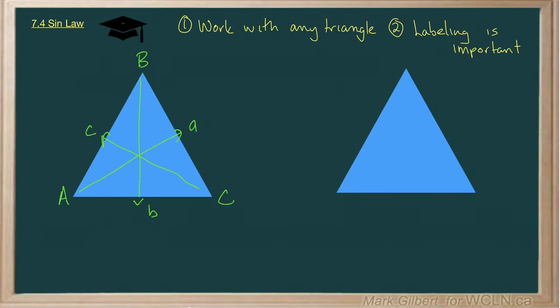Now, the sine law says that the sine of angle A divided by a is equal to the sine of angle B divided by b, which is equal to the sine of angle C all over little c. Now, we'd only ever really use two of these at once, depending on the information given.